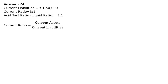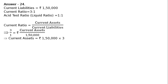Current ratio is equal to current assets upon current liabilities, which implies that 3 upon 1 is equal to current assets upon current liabilities. In place of current liabilities, write down its value Rs. 1,50,000. Cross multiply to find out current assets — current assets is equal to Rs. 4,50,000.